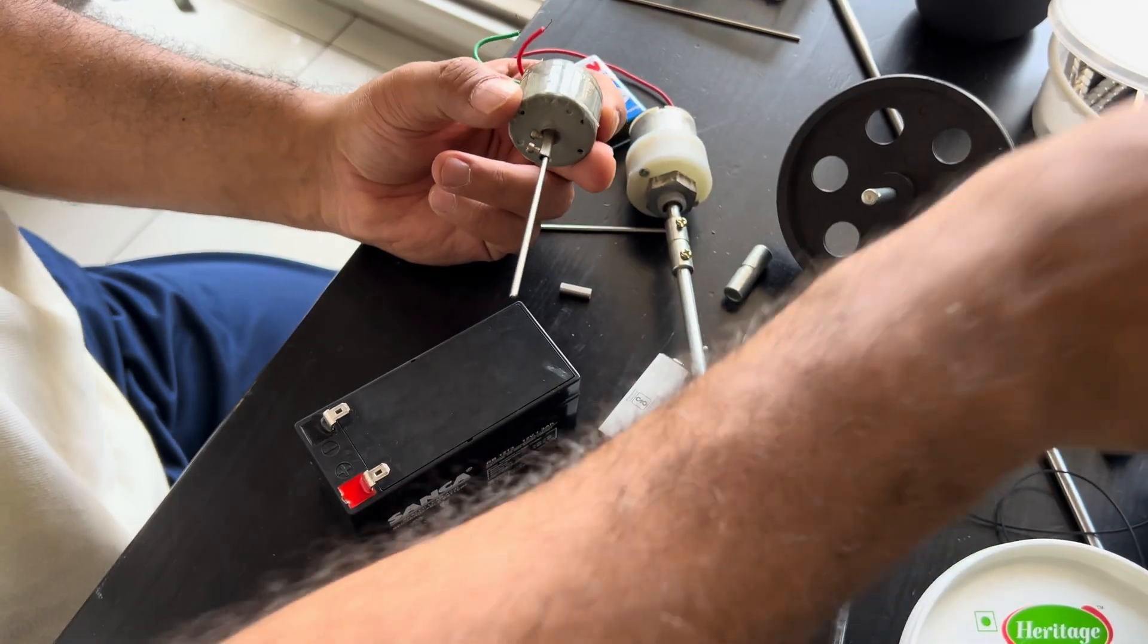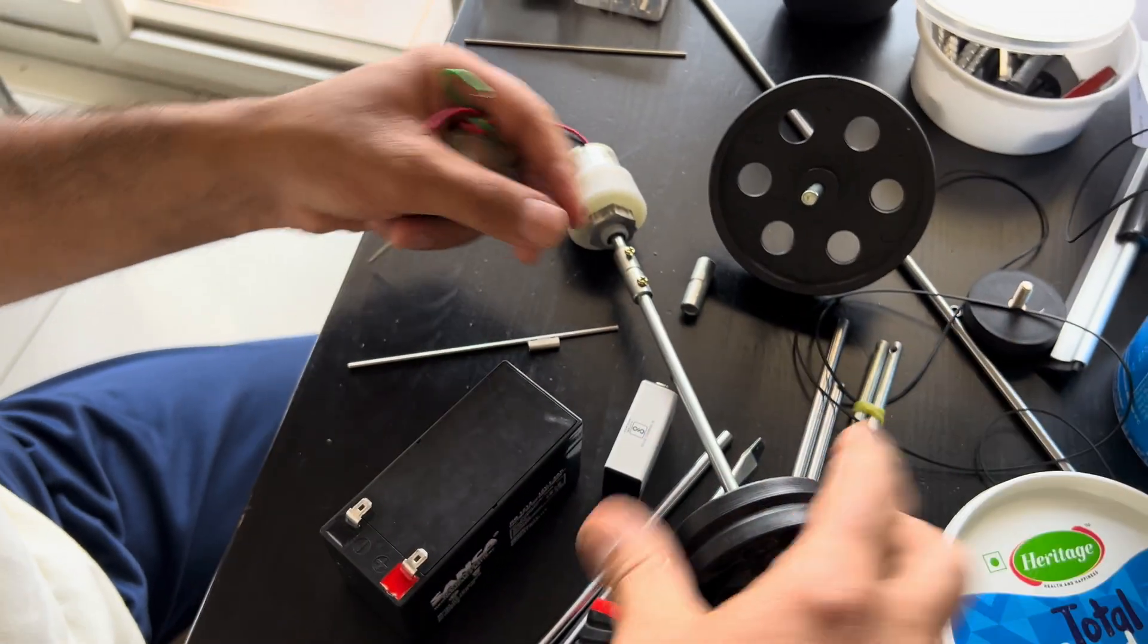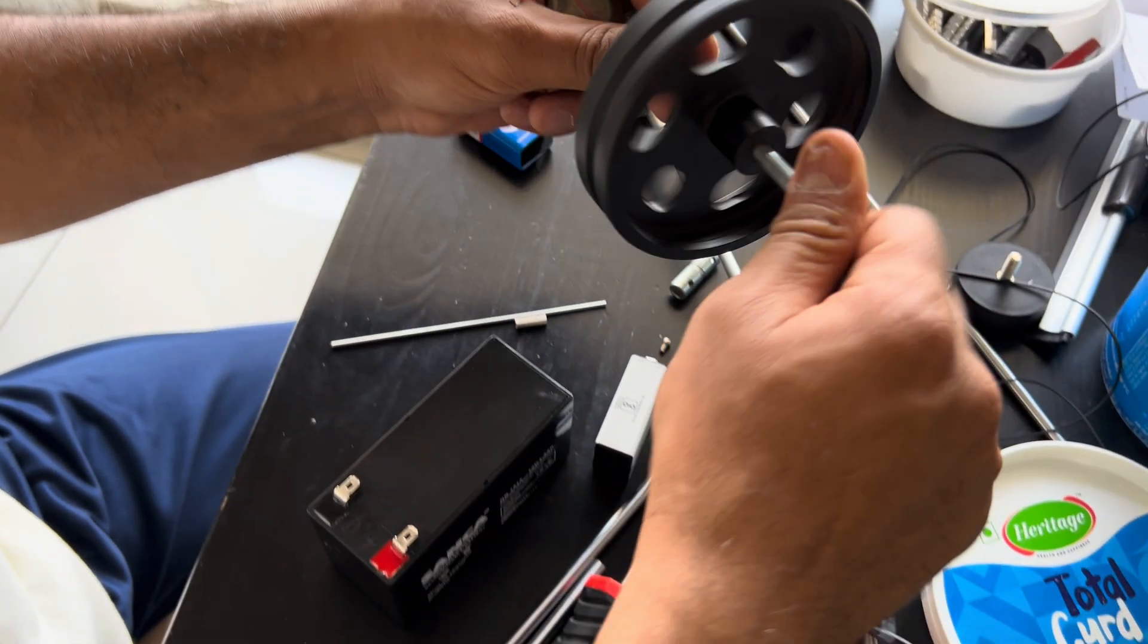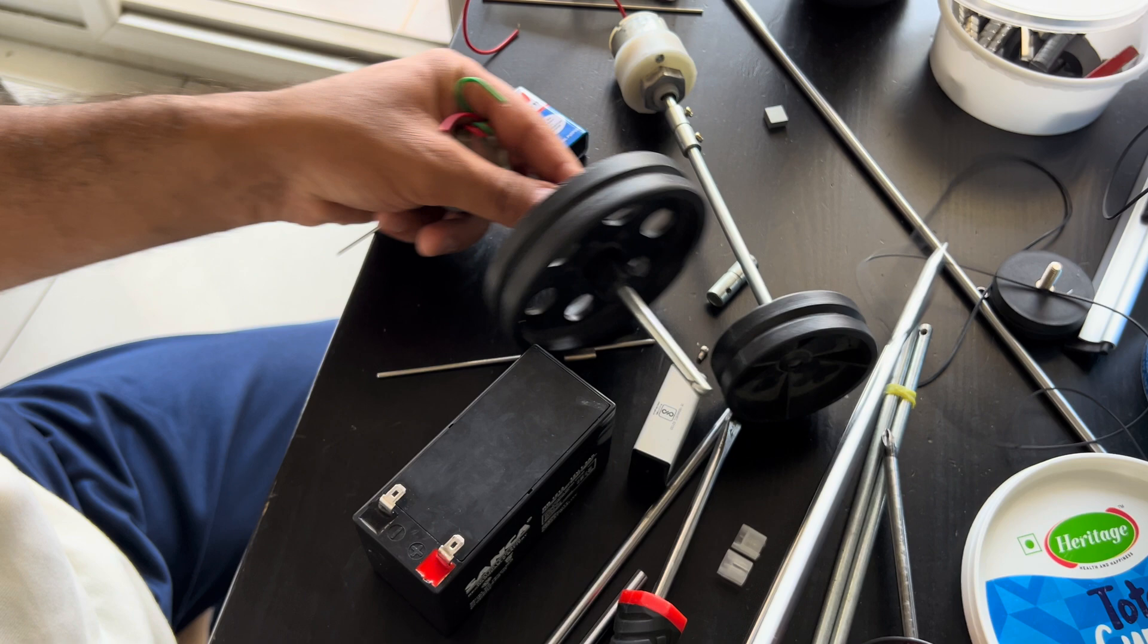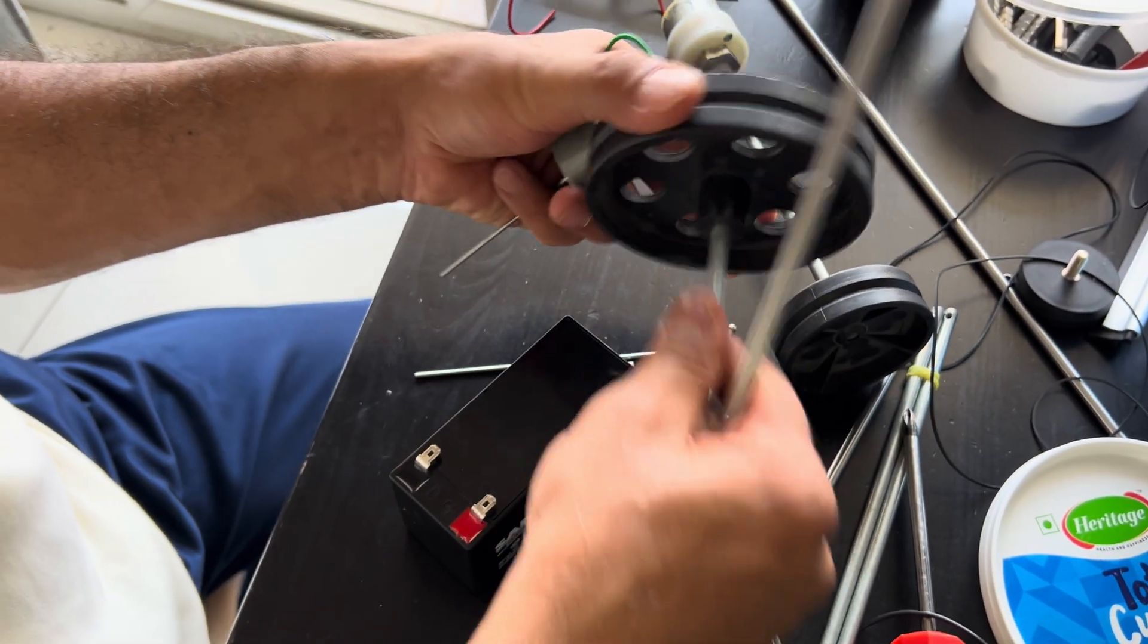So you can buy these belts, belt kind of things. These pulleys, these pulley wheels. These shafts. And also I have bought some rods like this which I can insert in here.